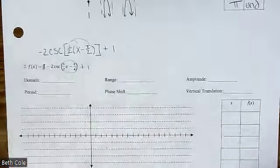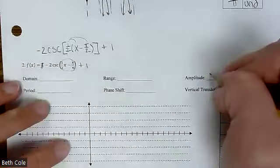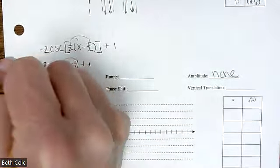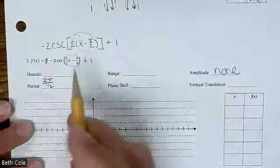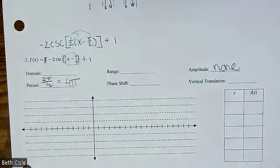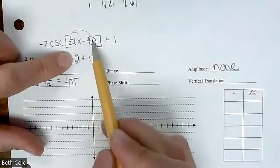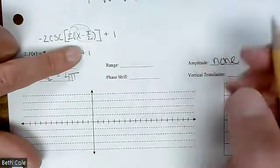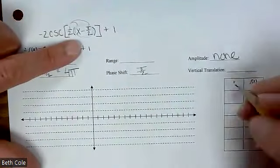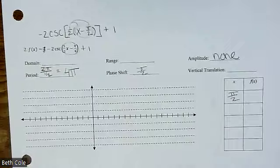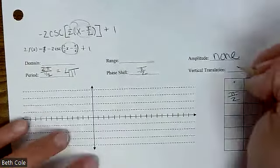Now let's go through and answer our stuff — you have to wait on domain and range. What's your amplitude? None — that's only for a wave. Period: two pi over one half, whatever's in front of the x, gives four pi. So it's now horizontally stretched. Phase shift — look at the factored version. It went right pi over two, so put right pi over two or just pi over two. That's where you start in your table. Vertical translation: up one.